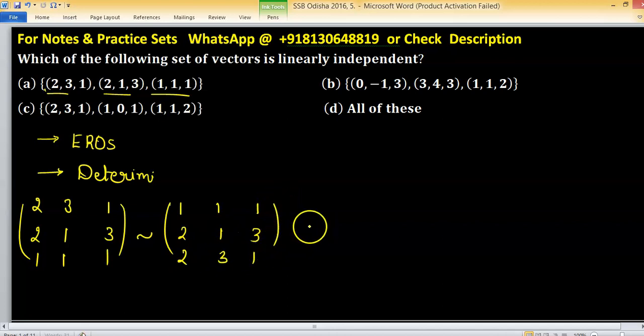After applying elementary row operation, we have 1 0 0, 1 minus 1 1, 1 1 minus 1.